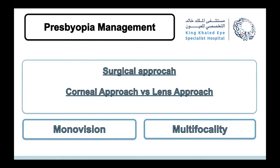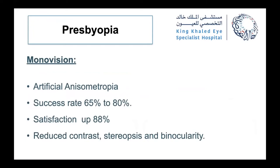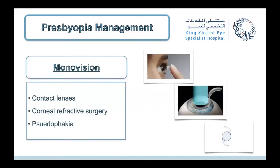The surgical approach can be divided into two forms: monovision or multifocality — inducing multifocal points within the cornea or the lens. In monovision, we achieve an artificial anisometropia, keeping one eye for near and the other for distance. This approach was introduced in the late 1960s, with a success rate of around 70% and satisfaction reaching up to 90%, but with a trade-off of reduced contrast, stereopsis, and binocularity.